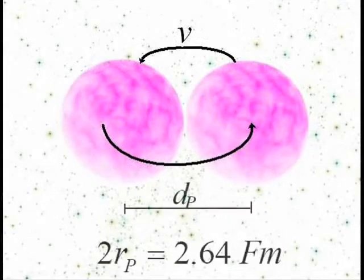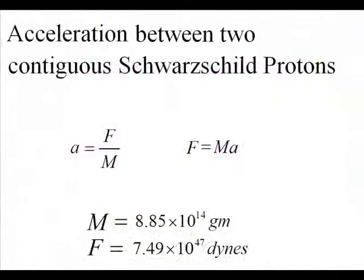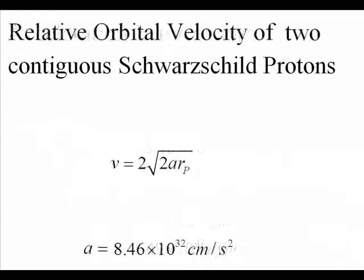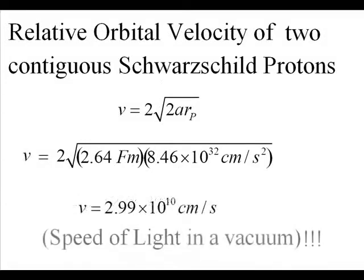If we then calculate the relativistic velocity of two Schwarzschild protons orbiting each other with their centers separated by one proton diameter, we get 2.99 times 10 to the 10th, which is also equal to the speed of light.